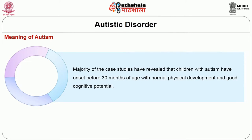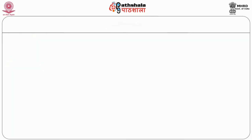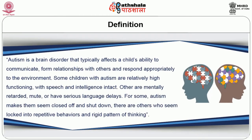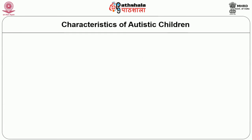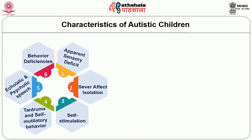Autism is a brain disorder that typically affects the child's ability to communicate, form relationships with others and respond appropriately to the environment. Some children with autism are relatively high functioning, with speech and intelligence intact. Others are mentally retarded, mute or have serious language delays. For some, autism makes them seem closed off and shut down; others seem locked into repetitive behaviors and rigid patterns of thinking.